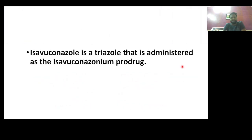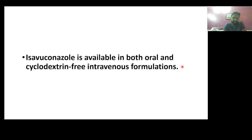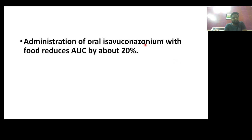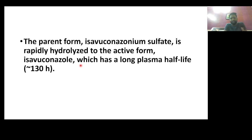Isavuconazole is a triazole that is administered as the Isavuconazonium prodrug. It is available in both oral and cyclodextrin-free intravenous formulations. Administration of oral Isavuconazole with food reduces the area under the curve by about 20%. The parent form, Isavuconazole sulfate, is rapidly hydrolyzed to the active form, Isavuconazole.